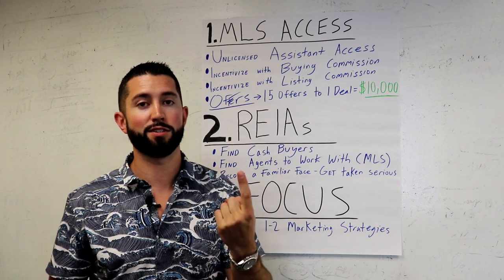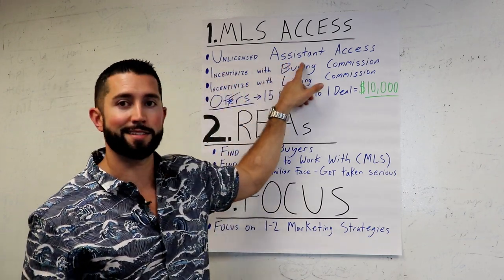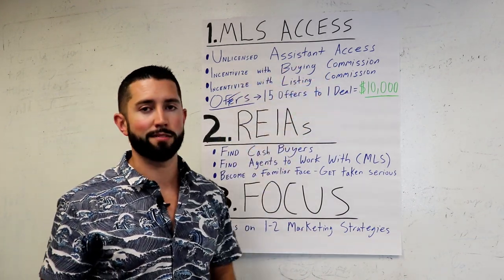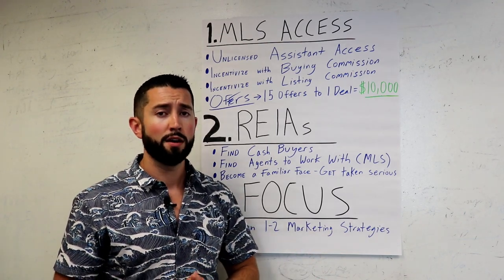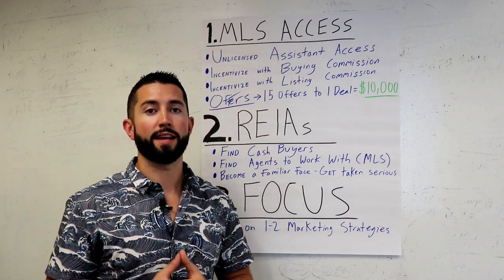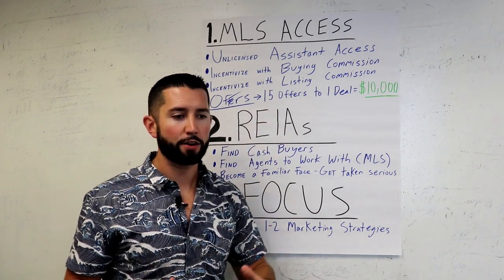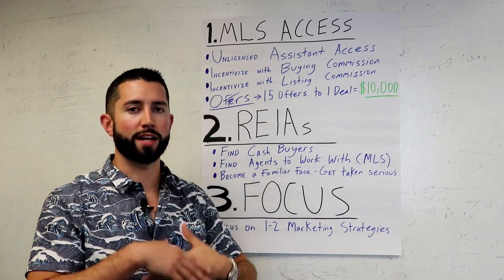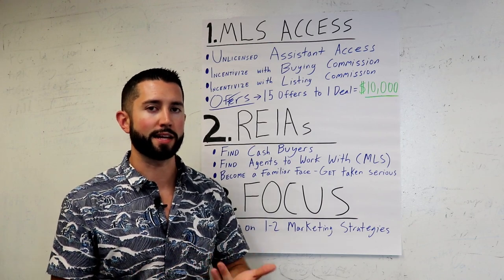There are two ways to get MLS access. One, you can be a licensed real estate agent or broker, or two, you can get unlicensed assistant access. It's really important that you try to get that. Unlicensed assistant access sometimes has a signup fee, like 50 bucks, or $25 per quarter — every three months. Go ahead and do that so you can get access to all the leads on the market in your area. You need to get it from a real estate agent or broker — they need to grant you this MLS assistant access. Make sure you pay for it; it'll be a lot easier when you do that.